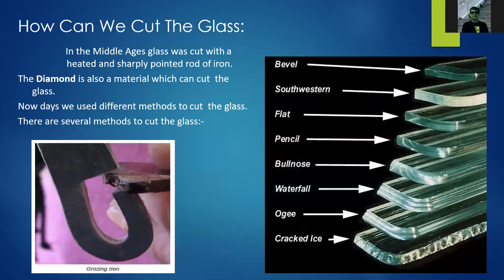How do we cut glass? In the middle ages, glass was cut with a heated and sharply pointed iron rod. The diamond is also a material which can cut glass.